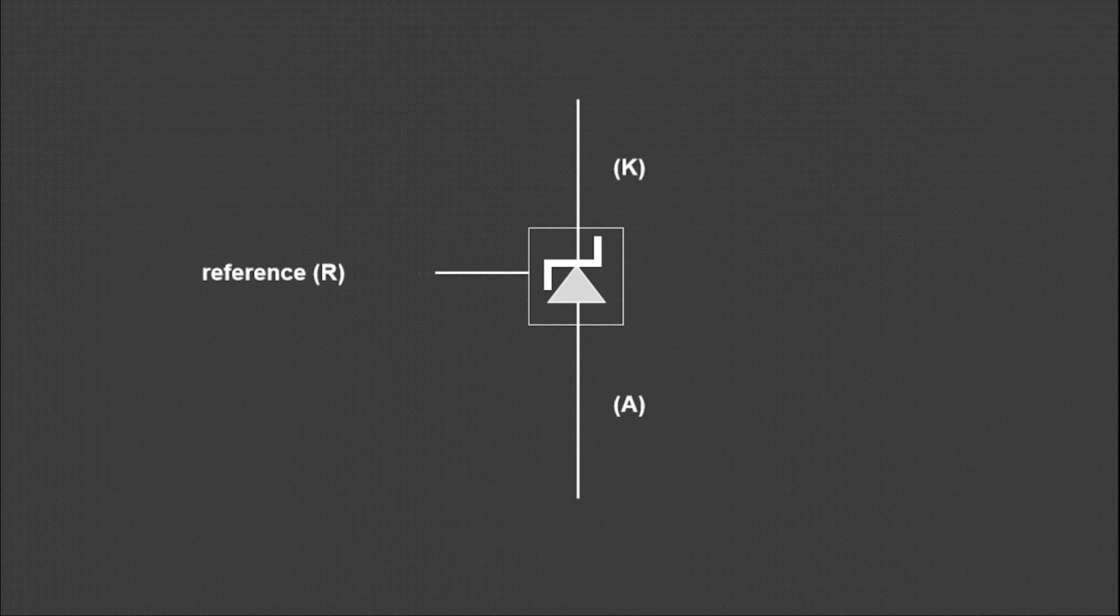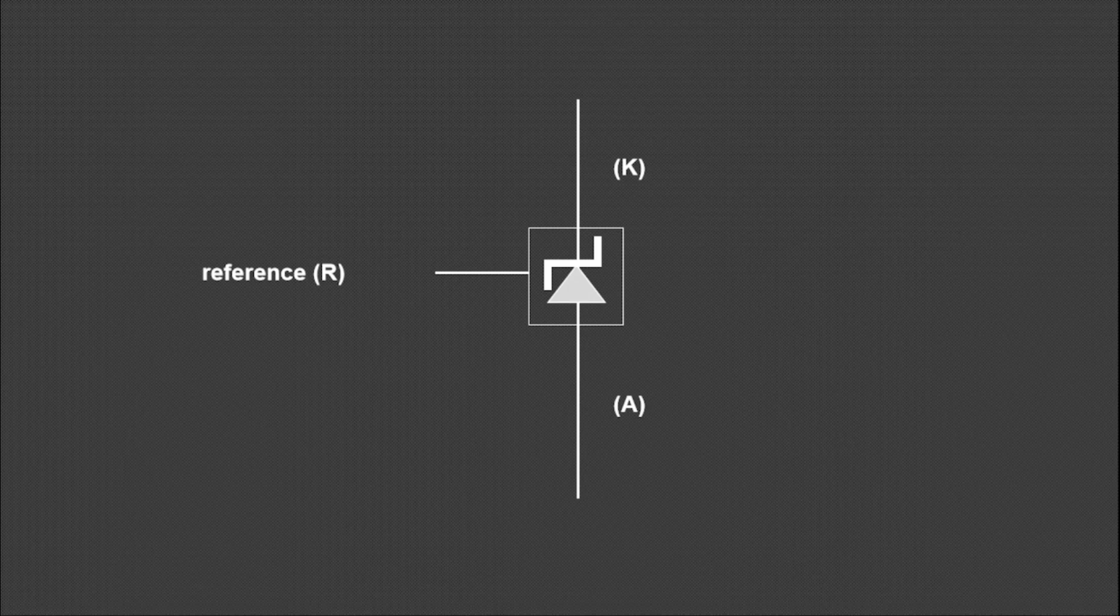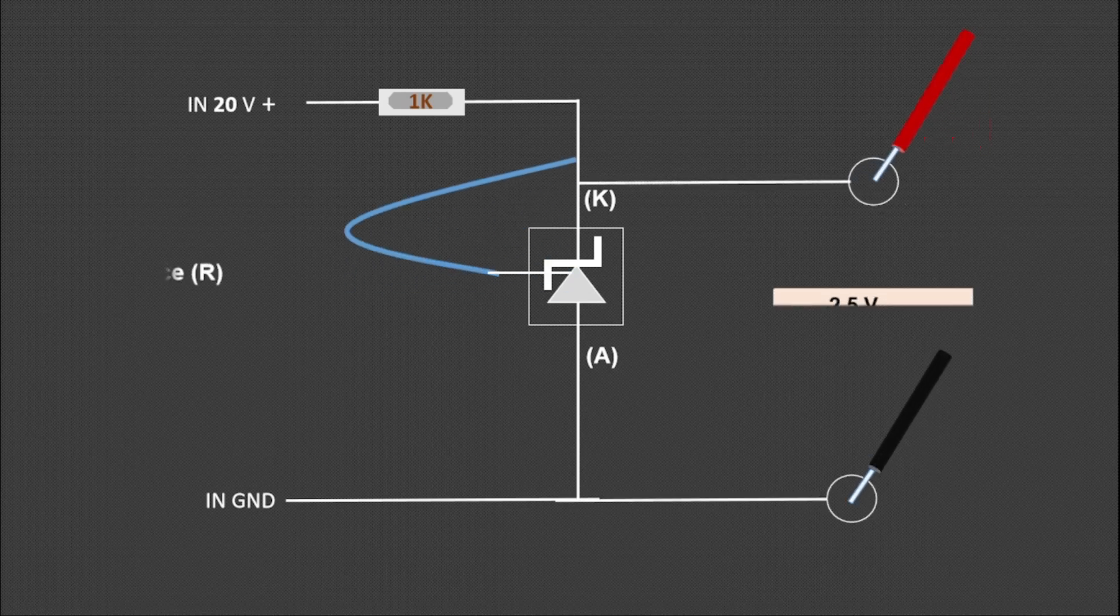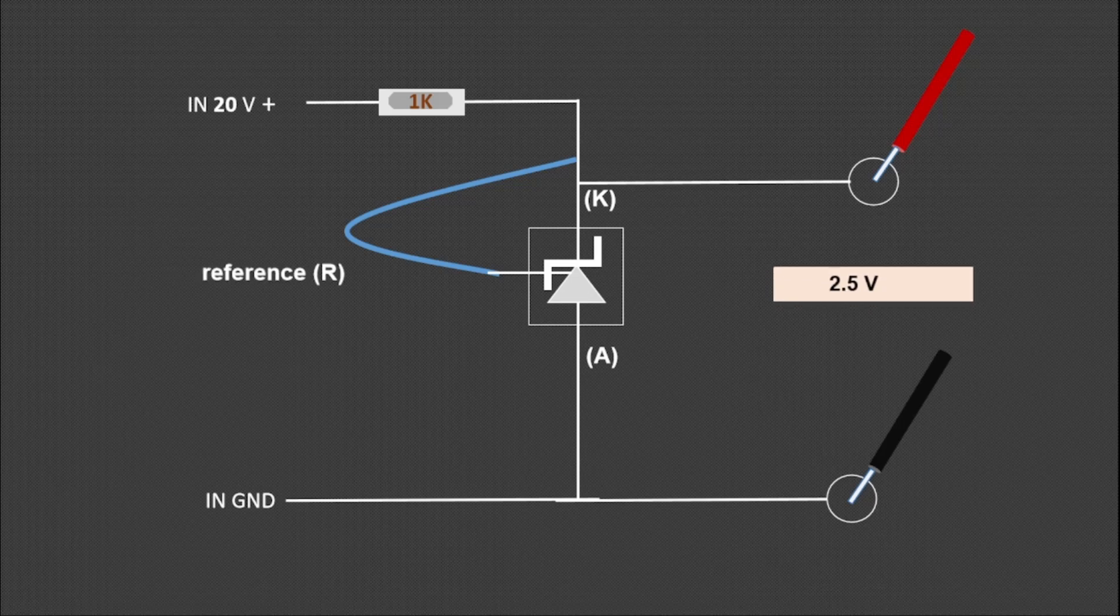You cannot set the Zener diode to high or low, but you can set the TL431 to low or high. If we connect the reference pin of TL431 to the cathode, then TL431 will go to low level and its low level is 2.5 volts and the same voltage will be obtained at the output.